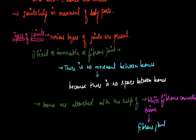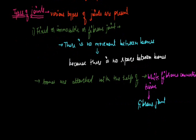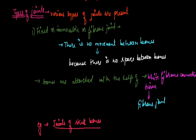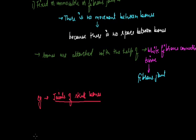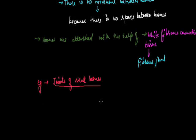An example of this type of joint is found in the joints of skull bones. The skull bones, which are eight in number, collectively form a box-like structure. In the skull bones, a fibrous or immovable joint is present in which movement between bones is absent.